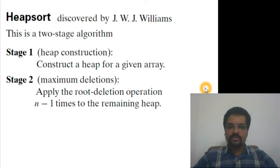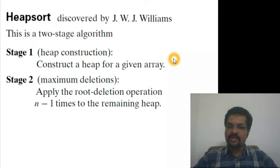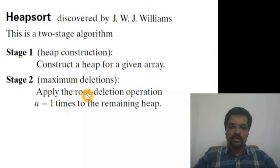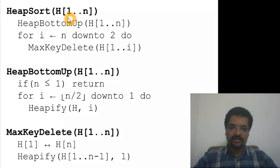In this video we are going to discuss heap sort. This sorting algorithm uses a technique known as transform and conquer. The idea is to transform the given unsorted list into an intermediate data structure called a heap, and then sort it. At this level it looks really simple - just two stages: the first stage is heap construction, and in the second stage we apply maximum key deletion n minus 1 times.